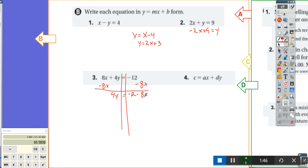Ingrid. I could add 12. But remember, I'm trying to get the y by itself. Divide by 4. So I'm going to divide everything by 4. 4y divided by 4 is y. Negative 12 divided by 4 is 3. Negative 8x divided by 4 is negative 2x.